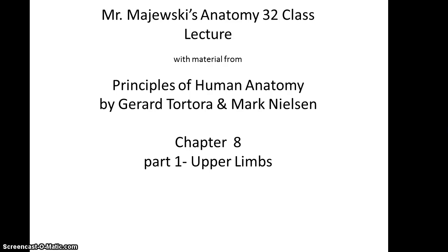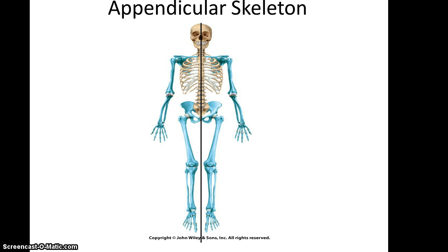Mr. Majewski's Anatomy 32 class, Chapter 8, Part 1: Upper Limbs. Today we'll be talking about the appendicular skeleton. It's important to point out that as humans we have what's referred to as bilateral symmetry, which means our right half looks sort of identical to our left half. So any time we learn about the bones of the right arm, there is a corresponding bone in the left arm, which helps cut down the number of bones we need to learn specific details about.